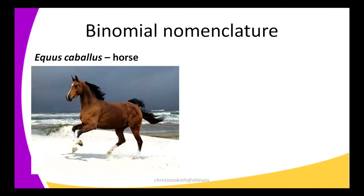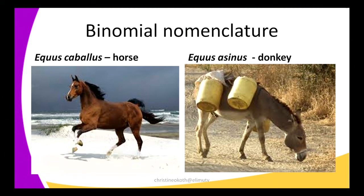Another example: we have a horse and a donkey. The scientific name of a horse is Equus caballus, and the donkey is called Equus asinus. They are all of the same genus — Equus — but of different species.